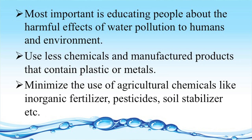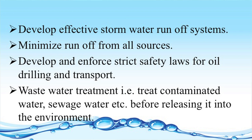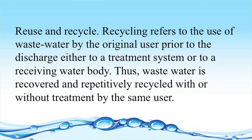The most important aspect is how to reduce water pollution. Most important is educating people about the harmful effects of water pollution on humans and the environment. Use fewer chemicals and manufactured products that contain plastic or metals. Minimize the use of agricultural chemicals like inorganic fertilizers, pesticides, and soil stabilizers. Develop effective storm water runoff systems and minimize runoff from all sources. Develop and enforce strict safety laws for oil drilling and transport. Wastewater treatment — treat contaminated water, sewage water, etc. before releasing it into the environment. And most important: reuse and recycle.